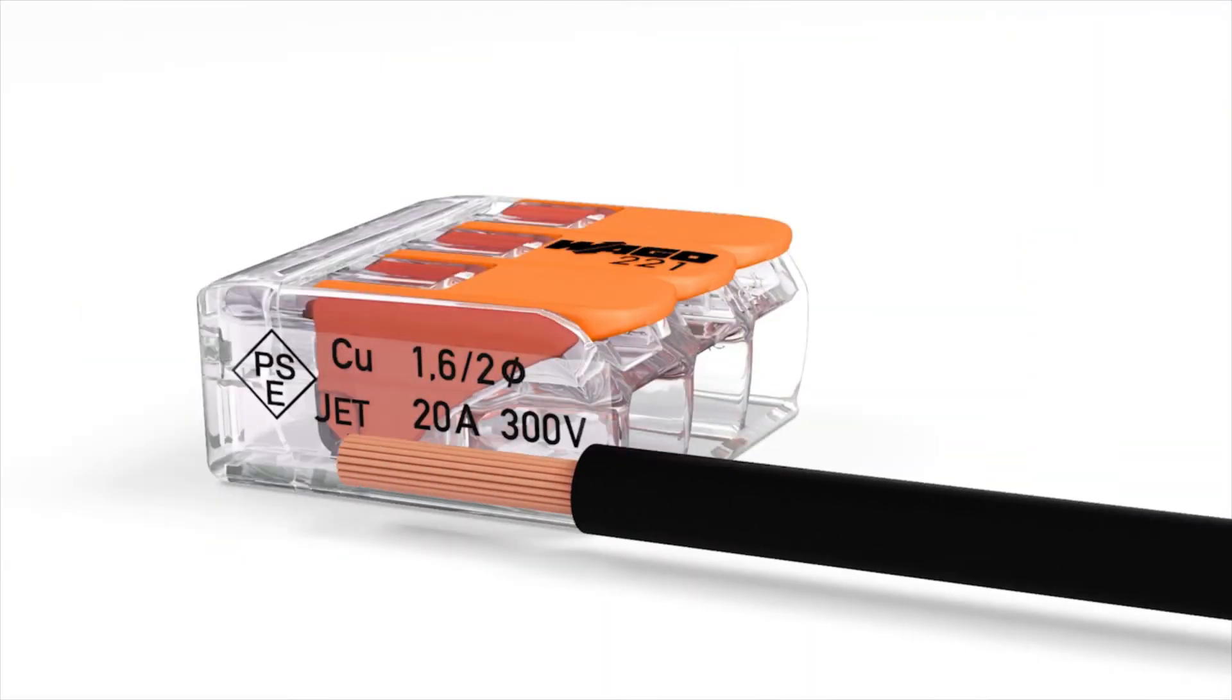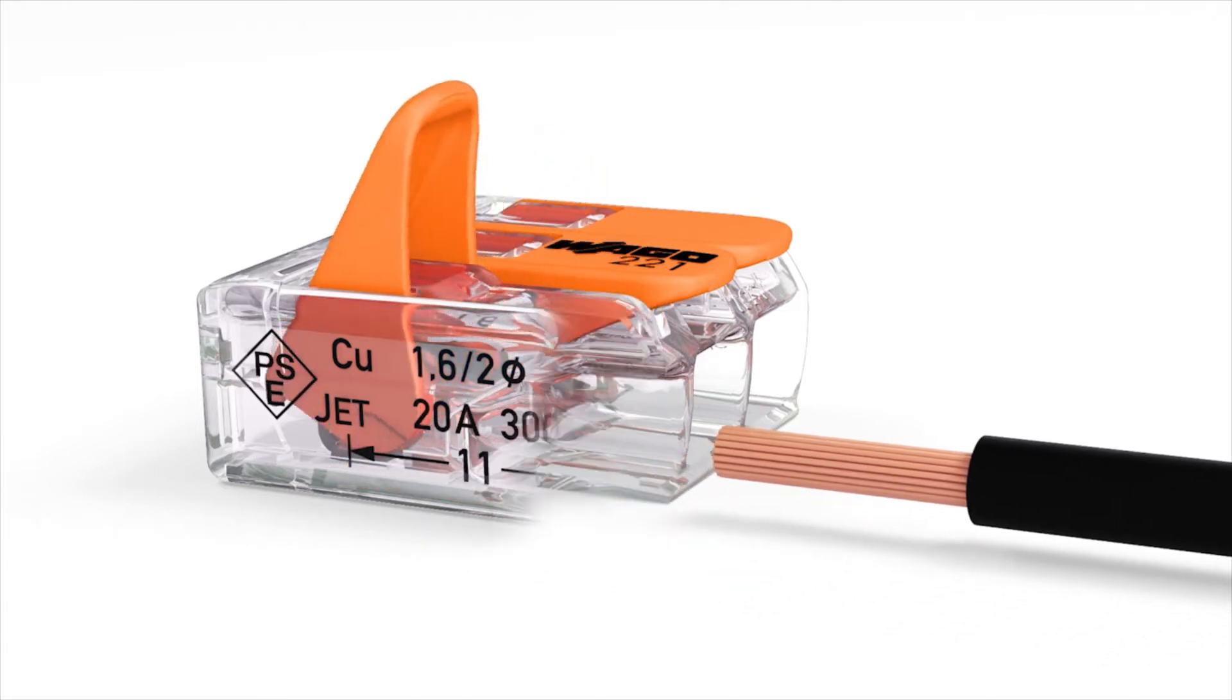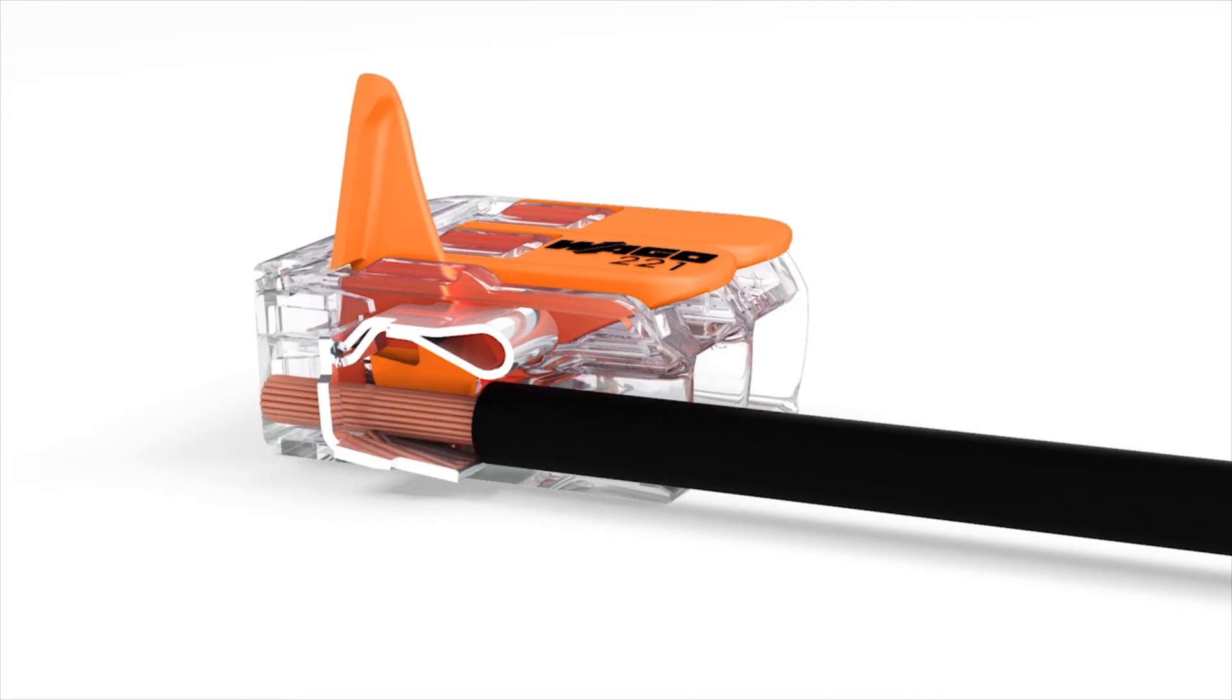Strip the conductor according to the strip length guide printed on the side of the connector housing. Open the clamping unit via the easy-to-use orange lever. Insert the stripped conductor, then lower the lever to close the clamp.